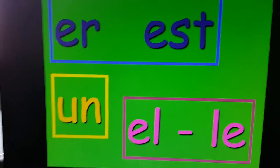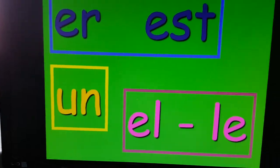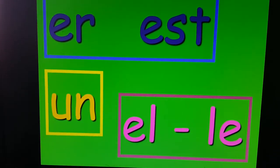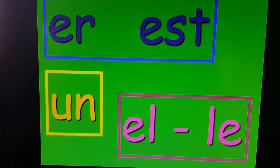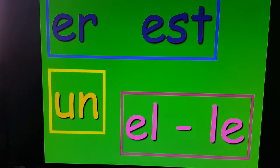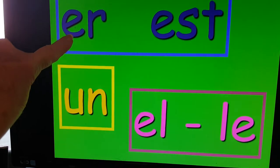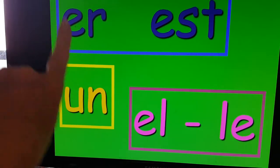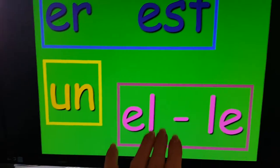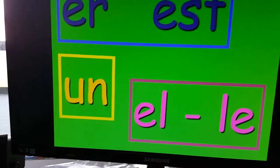Hello, lovies. Today we're going to do something a little different. I want to tell you about things we add to words. We're going to talk about ER and EST added to words, UN added to words, and EL or LE that are added to words.